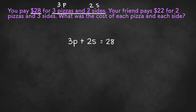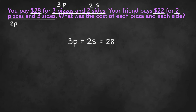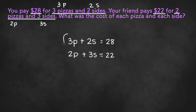Now we need to do the same thing for the second part of the information. Your friend pays $22 for two pizzas and three sides. Two pizzas would be 2p and three sides would be 3s, so 2p plus 3s equals 22. And that would be our System of Equations.